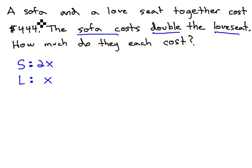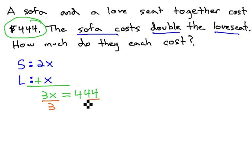We're also told together they cost $444. If we combine these together, 2x plus x, we get 3x, must be equal to that combined price of $444. We now have an equation we can quickly solve by dividing both sides by 3 to get x is equal to 148.